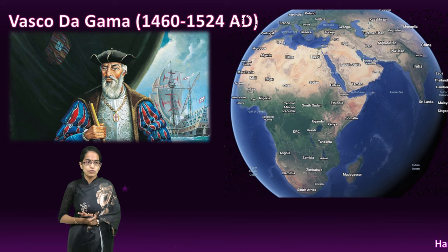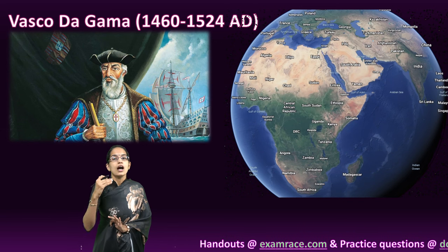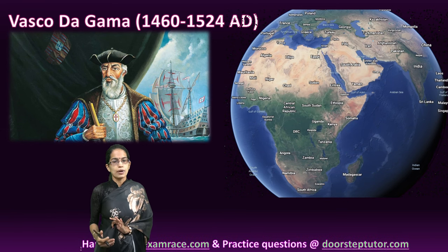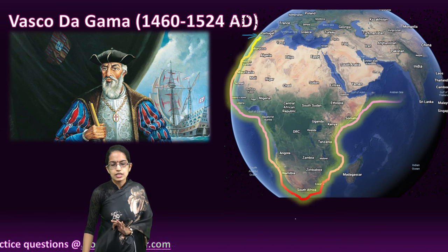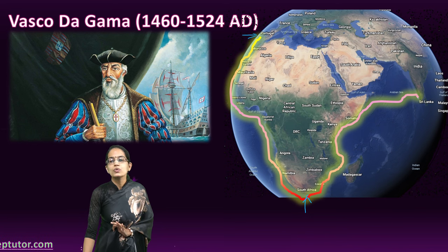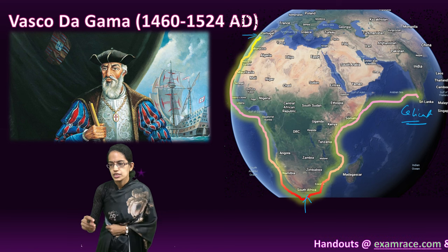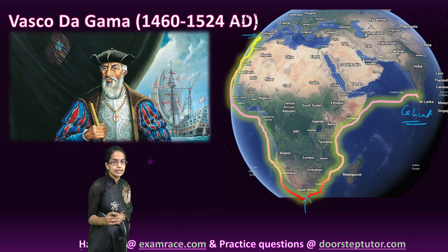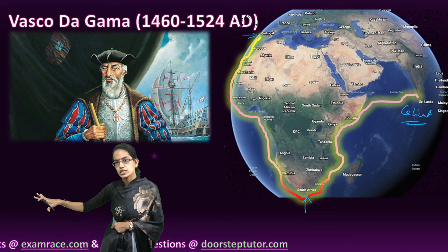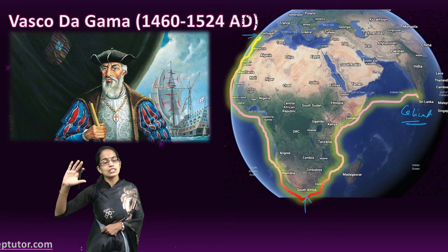The first important sailor we know is from Portugal — a Portuguese sailor known as Vasco da Gama. Vasco da Gama discovered the route to India. He moved from Portugal through the Cape of Good Hope, finally reaching Calicut in India. The region of Calicut was the first region where the Portuguese landed in India. Portuguese started to develop good trade relations not only with India, but also with Southeast Asian nations like Indonesia, Sri Lanka, the East Indies, and East Asia — China and Japan.